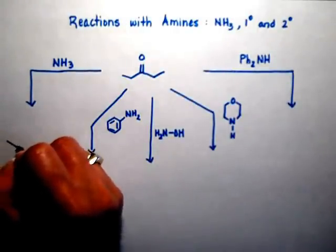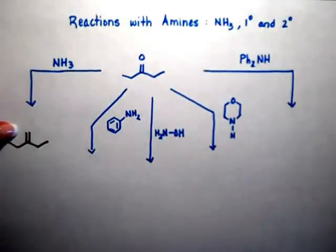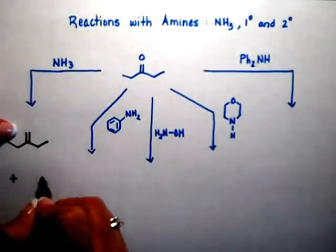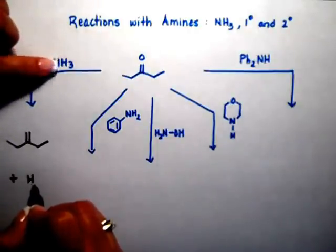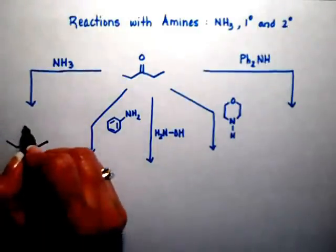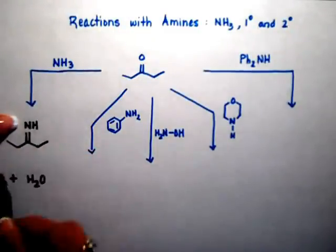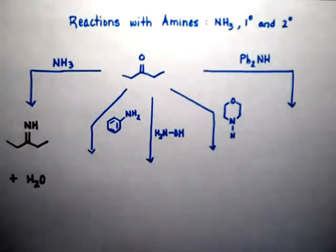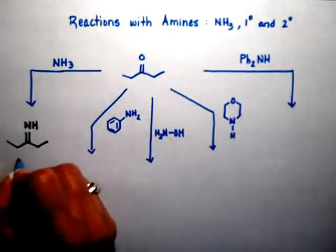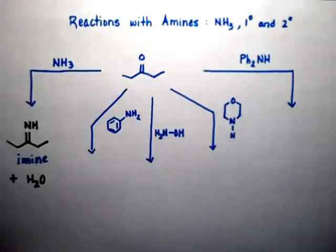When you have the right number of hydrogens, we're not going to move the double bond — the double bond is going to stay in place. I'm going to take the two hydrogens on the nitrogen and the oxygen to make water, and basically replace the oxygen with the nitrogen and the third group the nitrogen had attached to it. In the case of ammonia, the third group is a hydrogen. This right here is an imine, and the imine is when you have the carbon-nitrogen double bond.